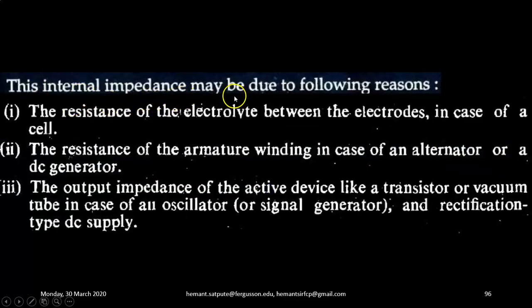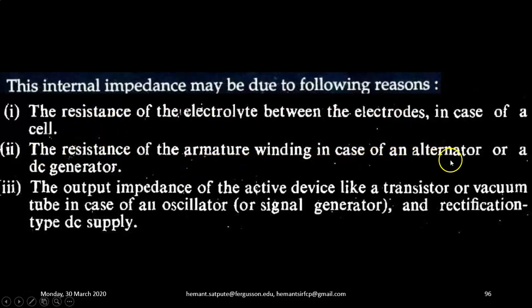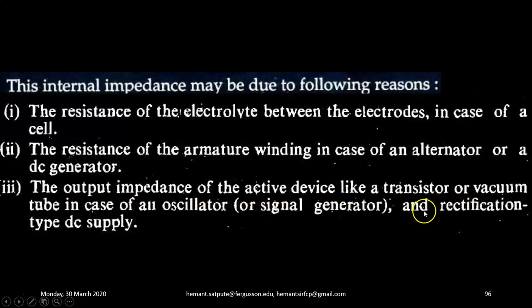This internal impedance may be due to the following reasons: the resistance of the electrolyte between the electrodes in case of a cell; the resistance of the armature windings in case of an alternator or a DC generator; and the internal impedance may be due to the output impedance of the active device like a transistor or a vacuum tube in case of all oscillators, signal generators, and rectification-type DC supplies. So these are the three reasons for a voltage source to have an internal impedance.